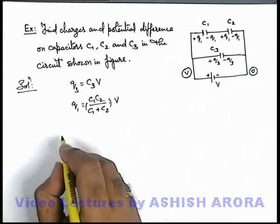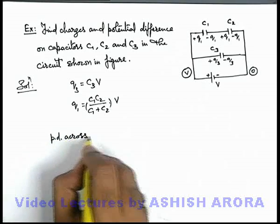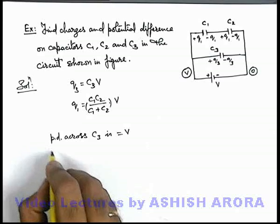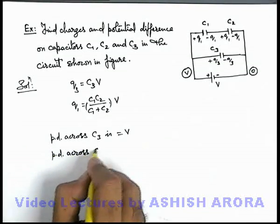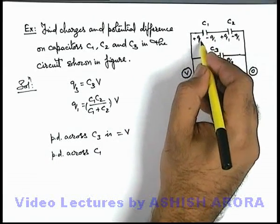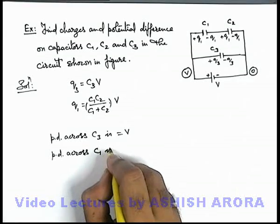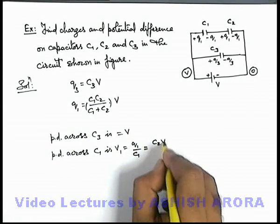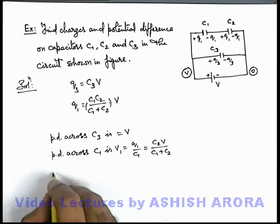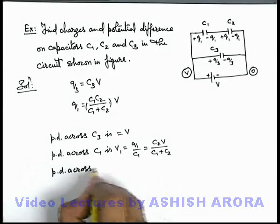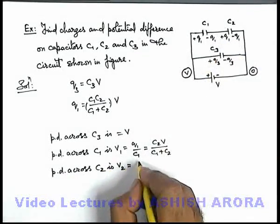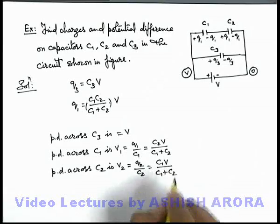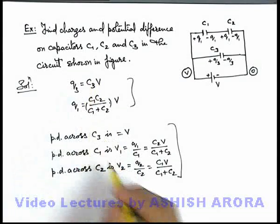To find the potential differences: the potential difference across C3 can be directly written as V, since the complete potential V is applied across it. The potential difference across C1 is V1 = Q1/C1. Substituting the value of Q1, this gives V1 = C2·V / (C1 + C2), since C1 cancels out. Similarly, the potential difference across C2 is V2 = Q2/C2 = C1·V / (C1 + C2). These are all the results required for this problem.